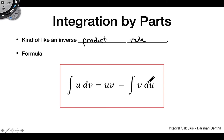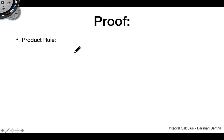Now this looks like gibberish, so let's take a second and look at the proof for where integration by parts really comes from, to help us better understand it. This proof is going to start with the product rule, which is nothing new to us.